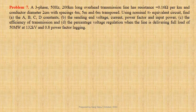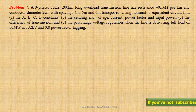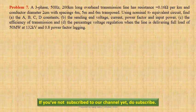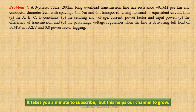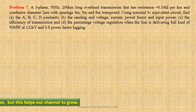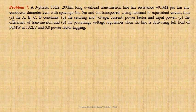A three-phase 50 Hz, 200 kilometer long overhead transmission line has resistance equal to 0.16 ohm per kilometer and conductor diameter 2 centimeters, with spacings 4 meters, 5 meters, and 6 meters, transposed. Using nominal pi equivalent circuit, we have to calculate the ABCD constants, the sending end voltage, current, power factor and input power. We also have to determine the efficiency of transmission and the percentage voltage regulation when the line is delivering full load of 50 megawatts at 132 kV and 0.8 power factor lagging.